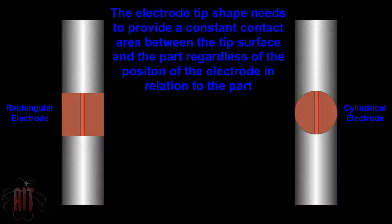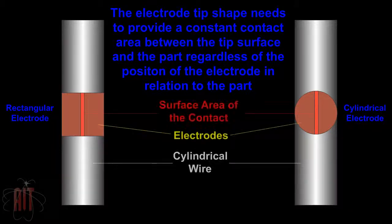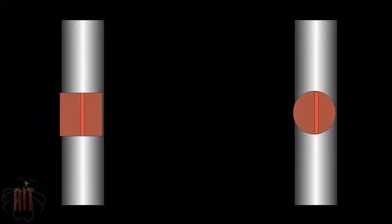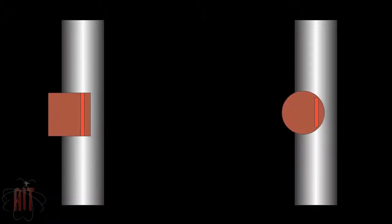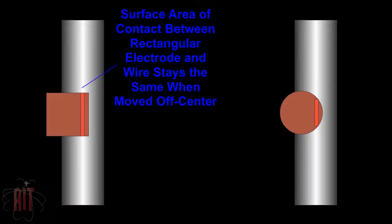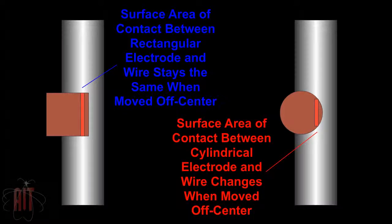The electrode tip shape needs to provide a constant contact area between the tip surface and the part regardless of the position of the electrode in relation to the part. As an example, the surface area of contact between a rectangular electrode and a wire stays the same when moved off-center. However, the surface area of contact between a cylindrical electrode and the wire changes when moved off-center.